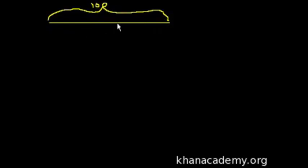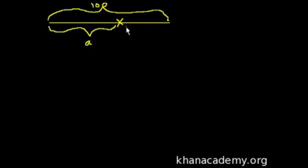So this wire is 100 centimeters long - doesn't matter if it's centimeters or meters or whatever, it's 100 long. We're going to cut it at some point. Let's use variables a and b - actually, let's use a and (100 minus a). So 'a' is the distance from the left-hand side of the wire, and then the right-hand piece is 100 minus a.